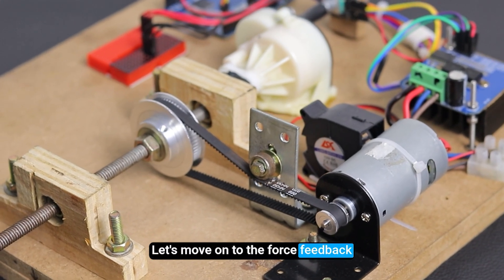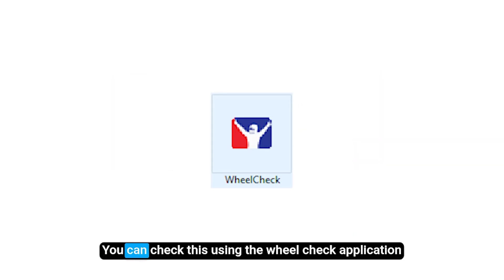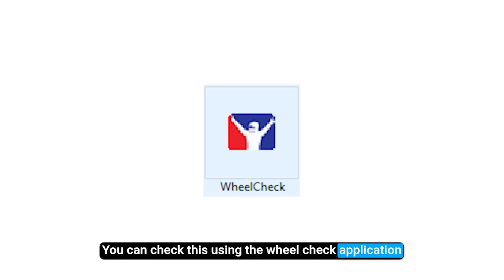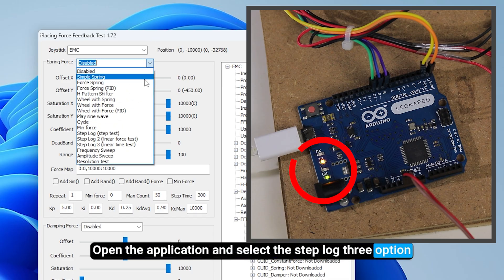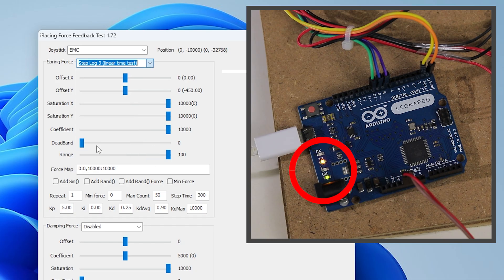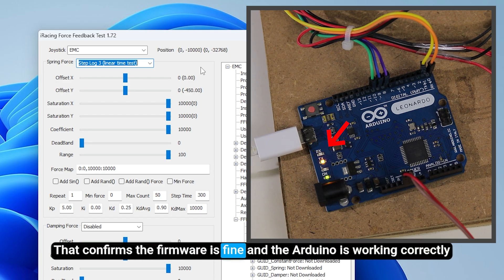Let's move on to the force feedback. First, we need to check that the Arduino is sending any signal while working feedback. You can check this using the wheel check application. Open the application and select the step log 3 option. Then you will see the LEDs on the Arduino board start to react. That confirms the firmware is fine and the Arduino is working correctly.